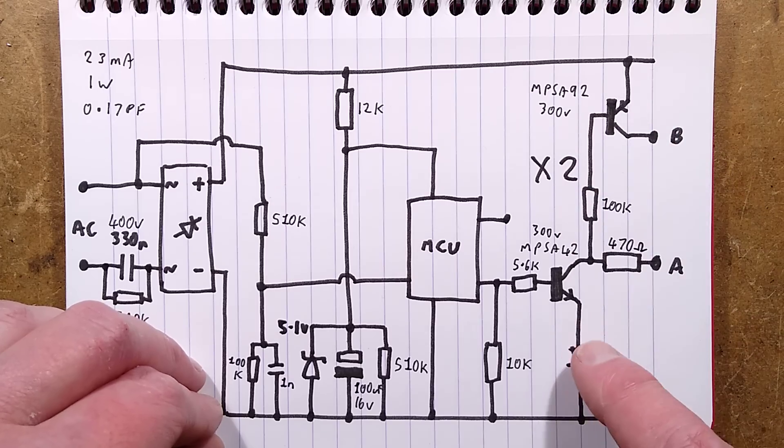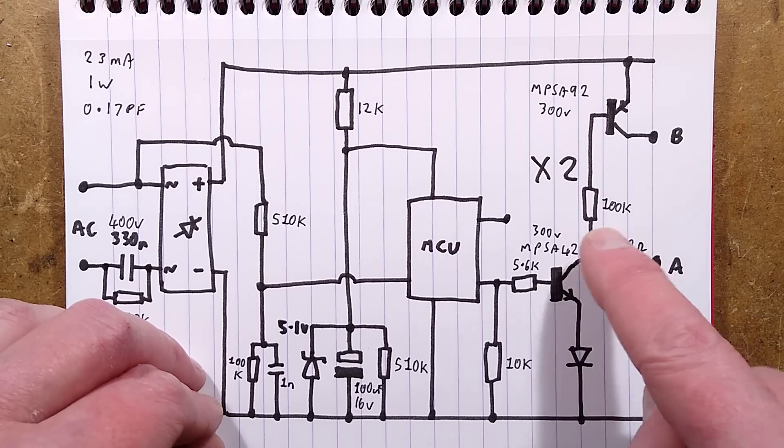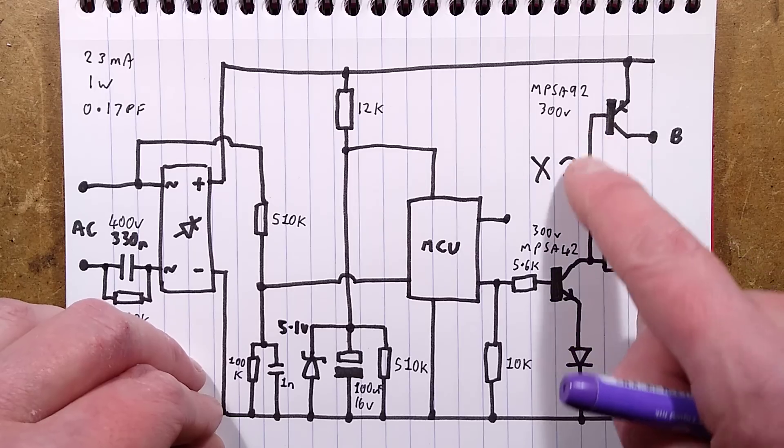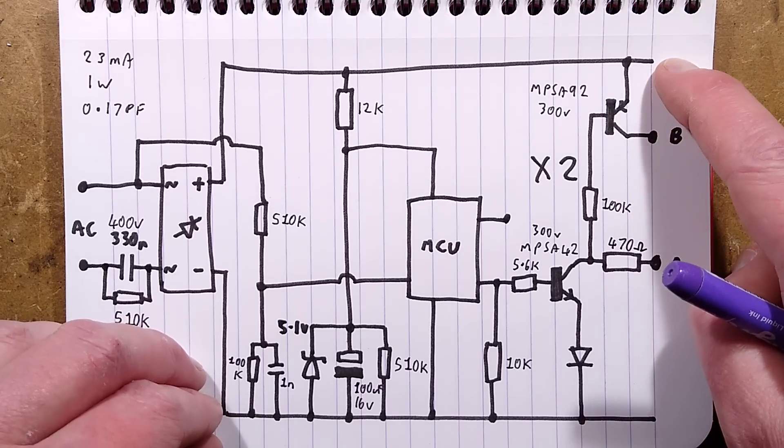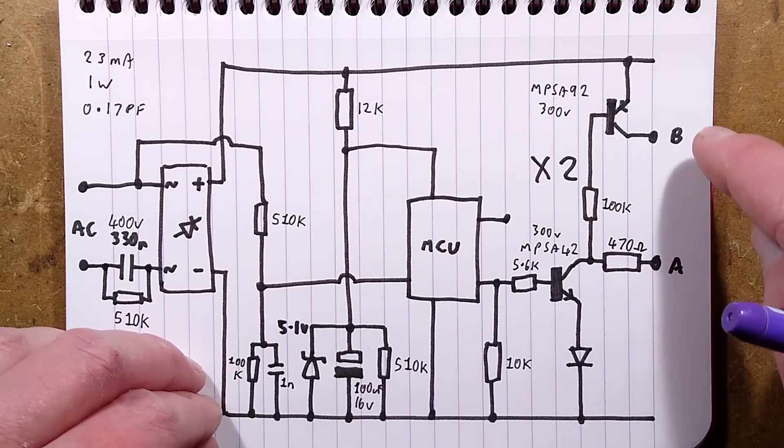So when this one turns on as well as turn the LEDs on via this resistor, it also turns the opposite channel's transistor on and that takes the other leg up to the positive. So now this is negative and this is positive.